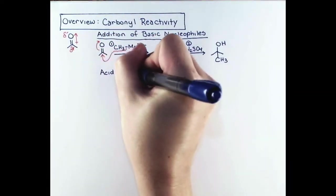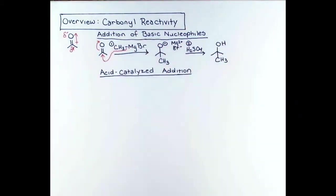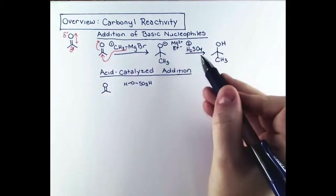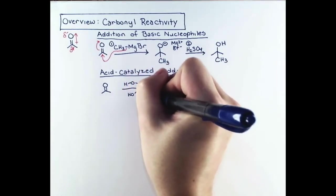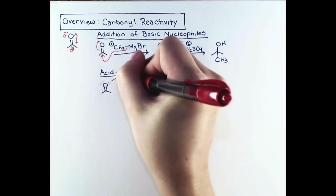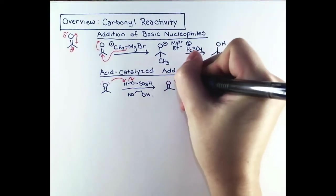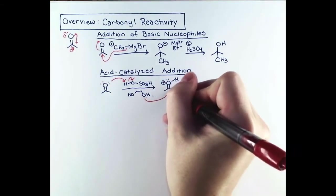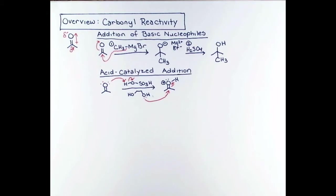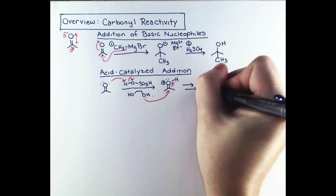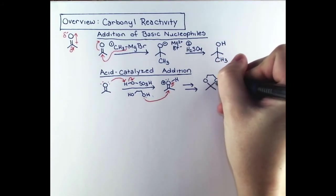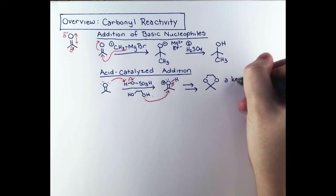Acid-catalyzed additions of nucleophiles are also possible with aldehydes and ketones. Since the oxygen atom of the carbonyl is electron-rich, it can attack a proton. Once it's protonated, the positive charge on oxygen makes the adjacent carbon atom even more electropositive. In the reaction I've shown here, the nucleophile is one of the oxygen atoms of the molecule below the arrow, ethylene glycol. In several steps, we eventually get bonding of both oxygen atoms of ethylene glycol to the carbonyl carbon, forming this functional group called a ketal.